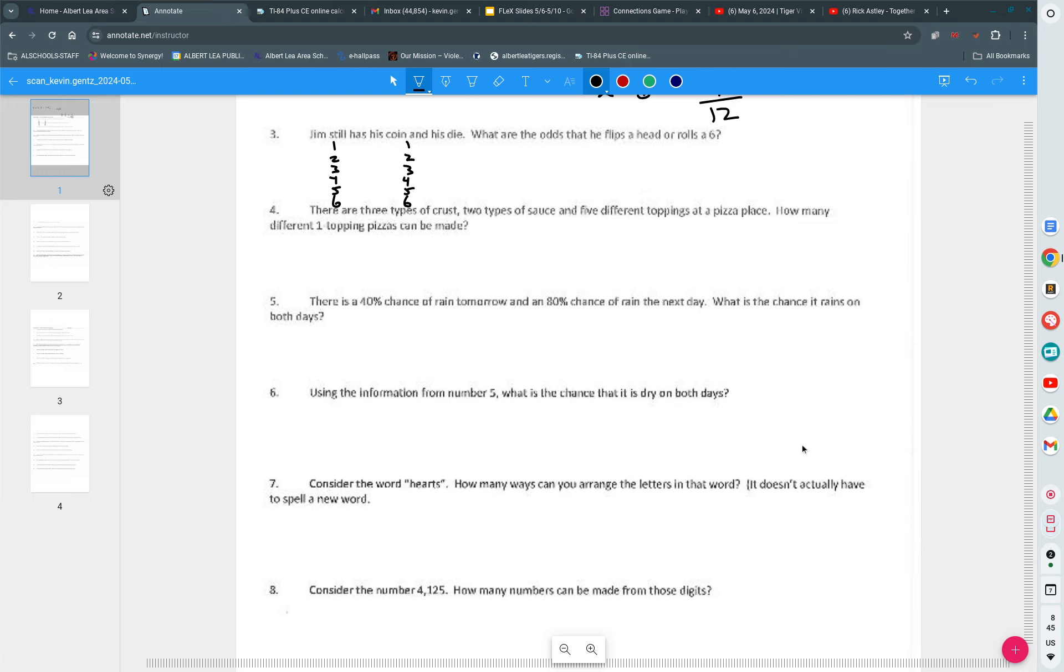Does everybody agree that these are the possible things that happen? That he rolls a one and flips tails, or rolls a two and flips tails, roll a three and flips tails, four and flips tails, five and flips tails, six and flips tails, or one and flips the head, two and flips the head, three and flips the head, four and flips the head, five and flips the head, six and flips the head. Does everybody agree that there's no other outcome other than those that I've listed? Those are the outcomes. So if those are the outcomes, circle the ones that involve either flipping a head or rolling a six. So how many give you a positive outcome? Seven out of how many? Twelve.